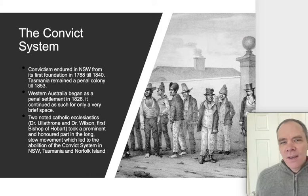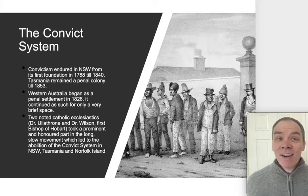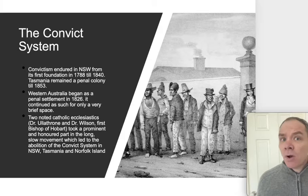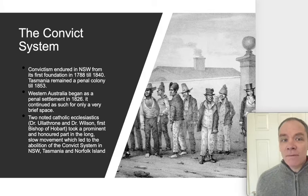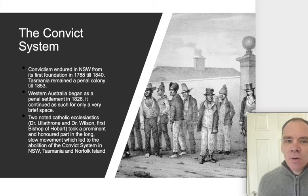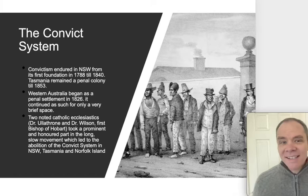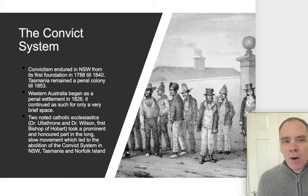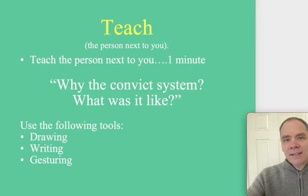Convictism endured in New South Wales from its foundation in 1788 all the way up to 1840, and Tasmania remained a penal colony until 1853. Western Australia began as a penal settlement in 1826 and continued as such for only a very brief space. Two noted Catholic ecclesiastics, Dr. Ullthorne and Dr. Wilson, first Bishop of Hobart, took a prominent and honoured part in the long, slow movement which led to the abolition of the convict system in New South Wales, Tasmania and Norfolk Island.